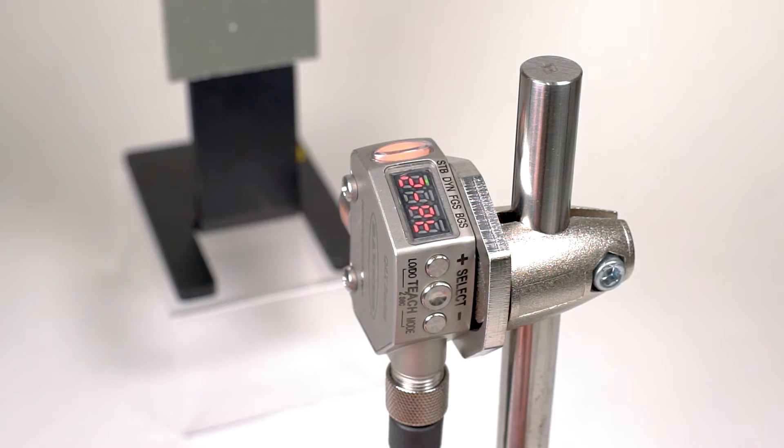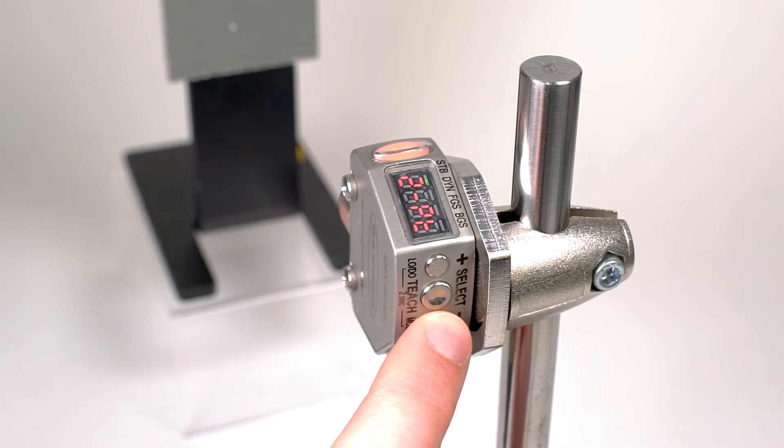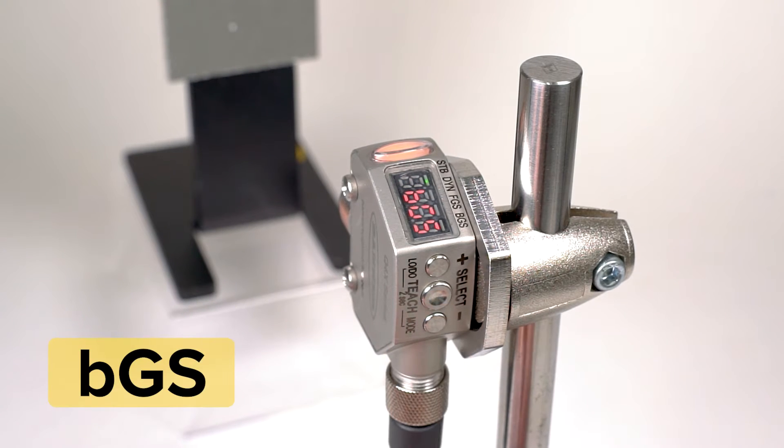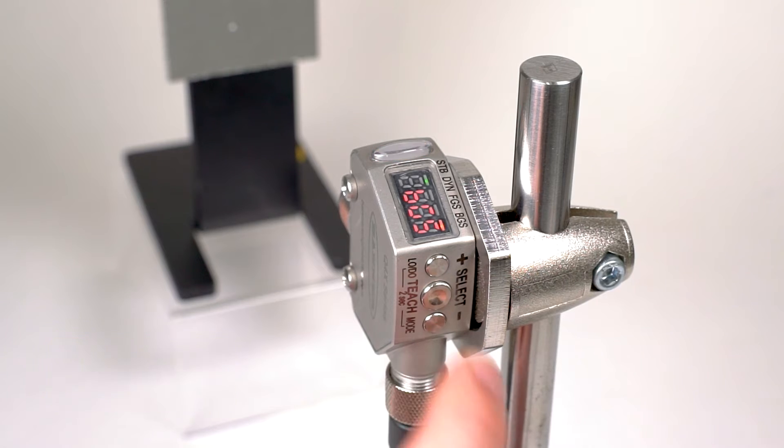Press the select button and use the plus and minus buttons to navigate through the options until you see BGS, and press the select button again. The display will flash to confirm your selection and then return you to the main menu.